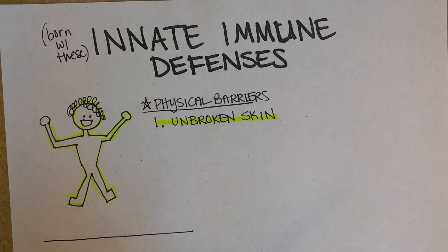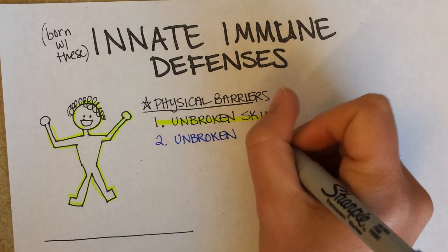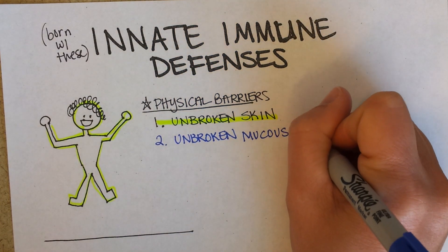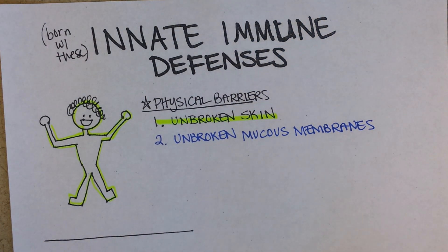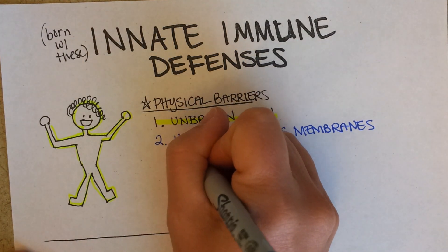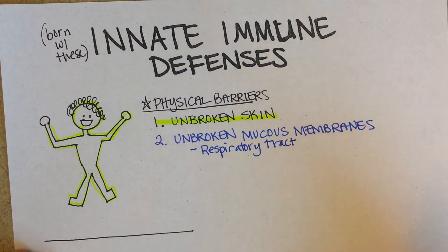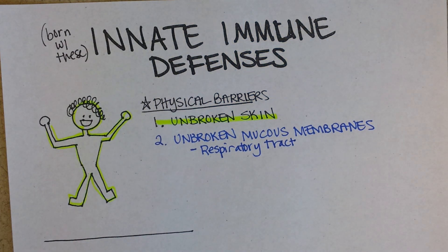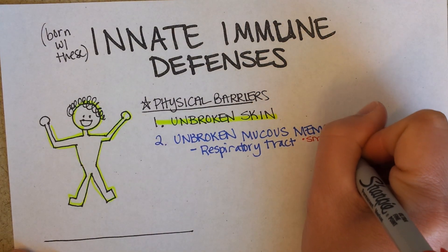Next, let's look at unbroken mucous membranes — you could say undamaged mucous membranes. The idea is that mucous membranes can be damaged and then let in an infection, just like skin can be broken and let in infection. The respiratory tract is one type, and it can be damaged by smoking, which makes smokers more likely to get respiratory infections.